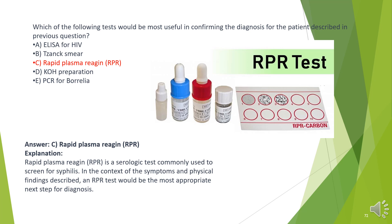The answer is C. Rapid plasma reagin (RPR). RPR is a serologic test commonly used to screen for syphilis. In the context of the symptoms and physical findings described, an RPR test would be the most appropriate next step for diagnosis.